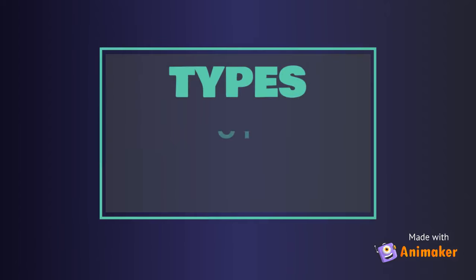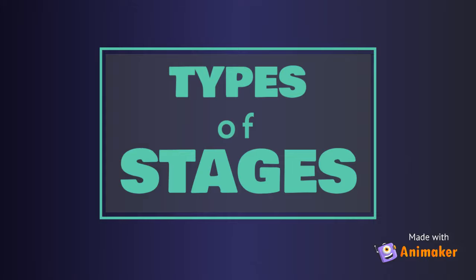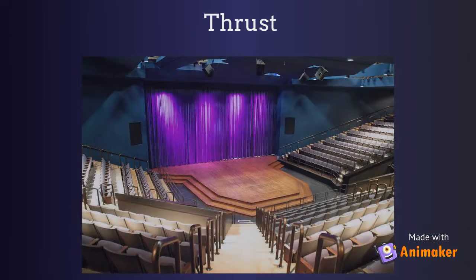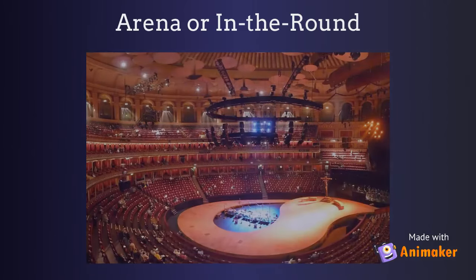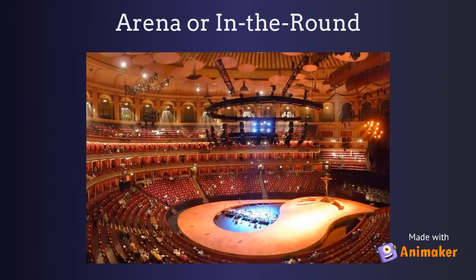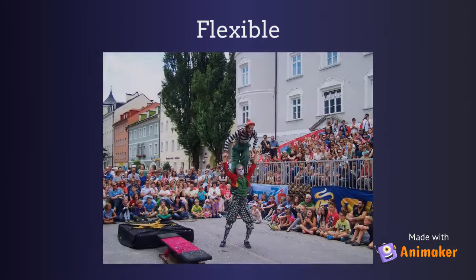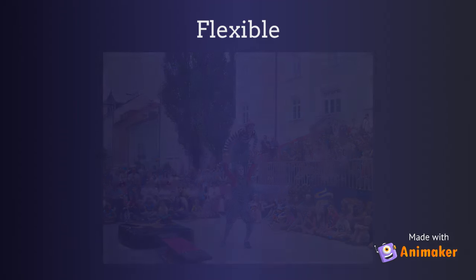Let's review the four types of stages you have just learned. A proscenium is the most well-known stage type and always has a frame around the performance area. A thrust stage has audience members on three sides. An arena or in the round stage is completely surrounded by audience members. Flexible stages are just that — flexible. They can be anywhere and any shape. Just like stories, theater can come in lots of different forms. Which stage is the most interesting to you?